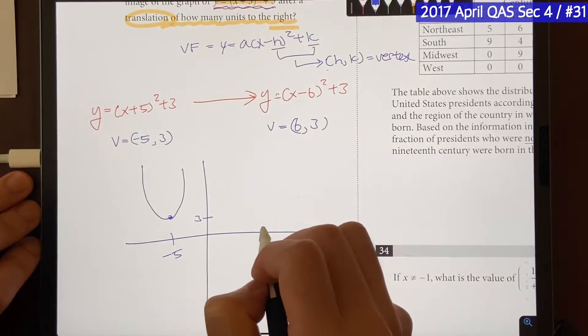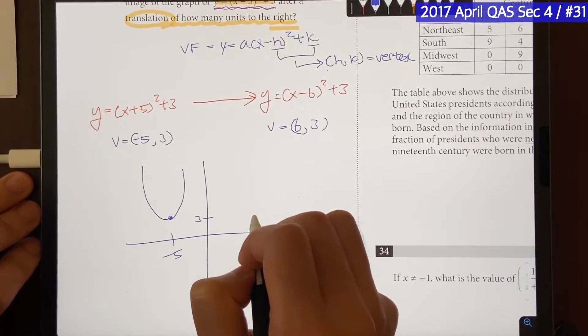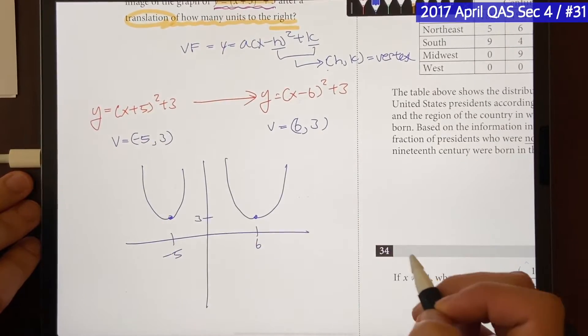And for the second one, it will be 6 and positive 3. Vertex is located right there. It's going to look something like that.